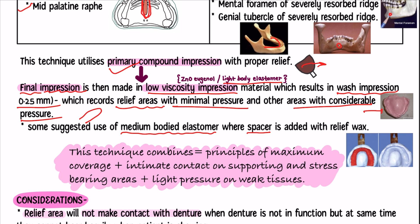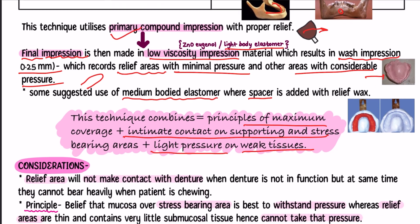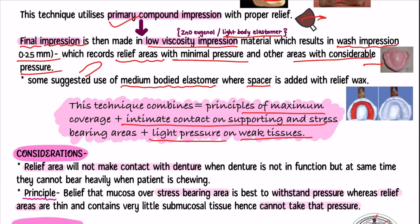This impression is usually made with finger pressure or using the closed mouth technique. To sum up, this technique provides maximum coverage of the denture-bearing areas, good and intimate contact on the stress-bearing areas, and minimal or light pressure on the weak tissues — the relief areas. The relief areas have less pressure, the stress-bearing areas have more pressure, and the denture is covered maximally over the mucosa. This is why this technique is the most widely used one.